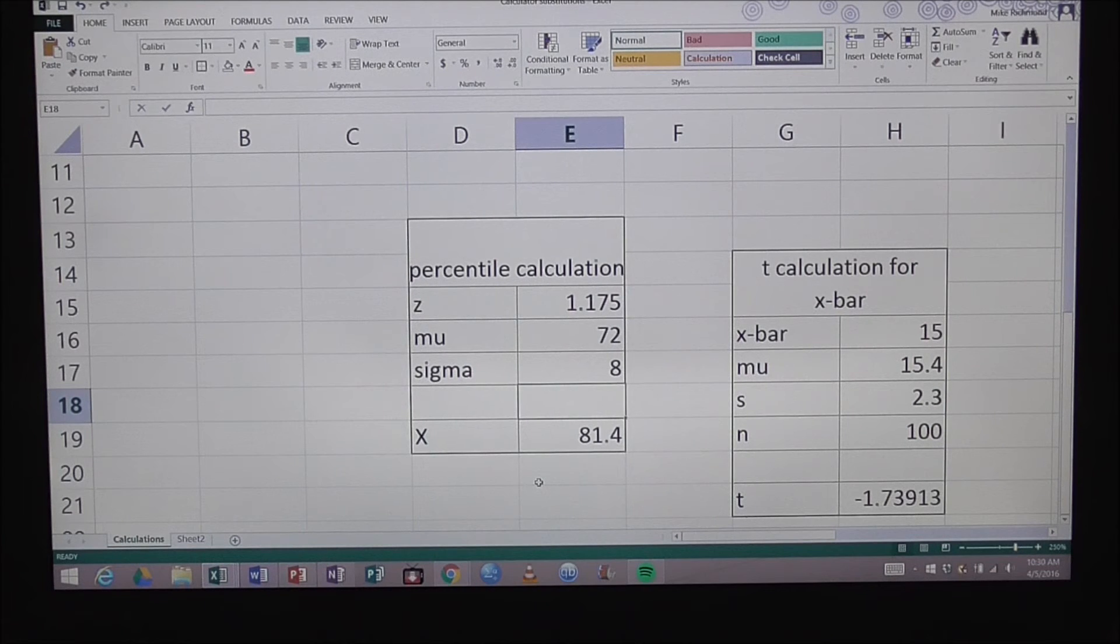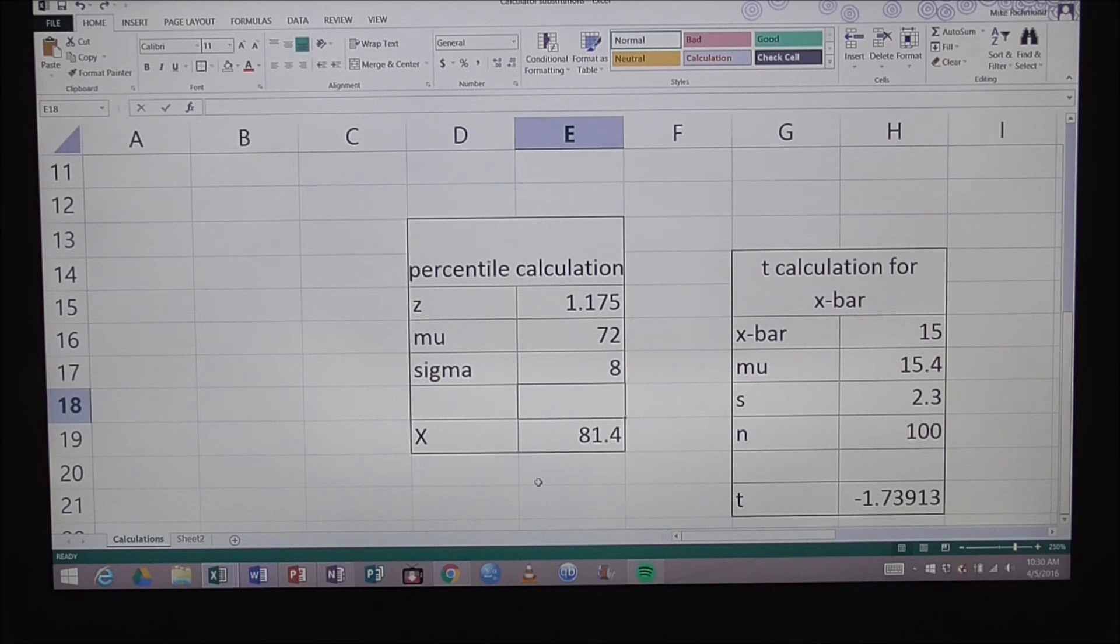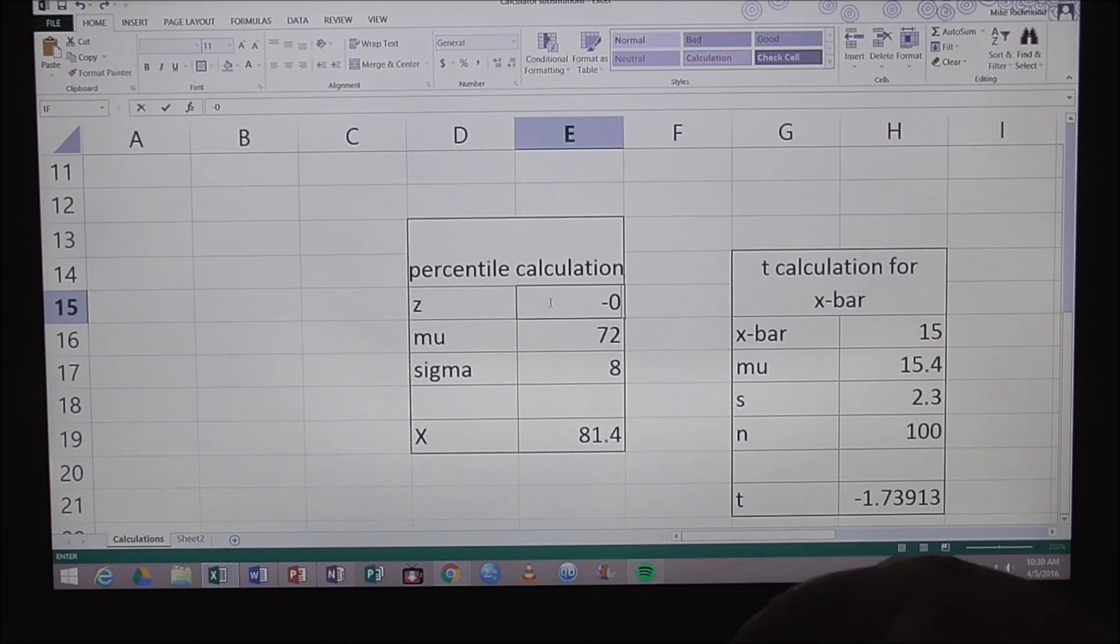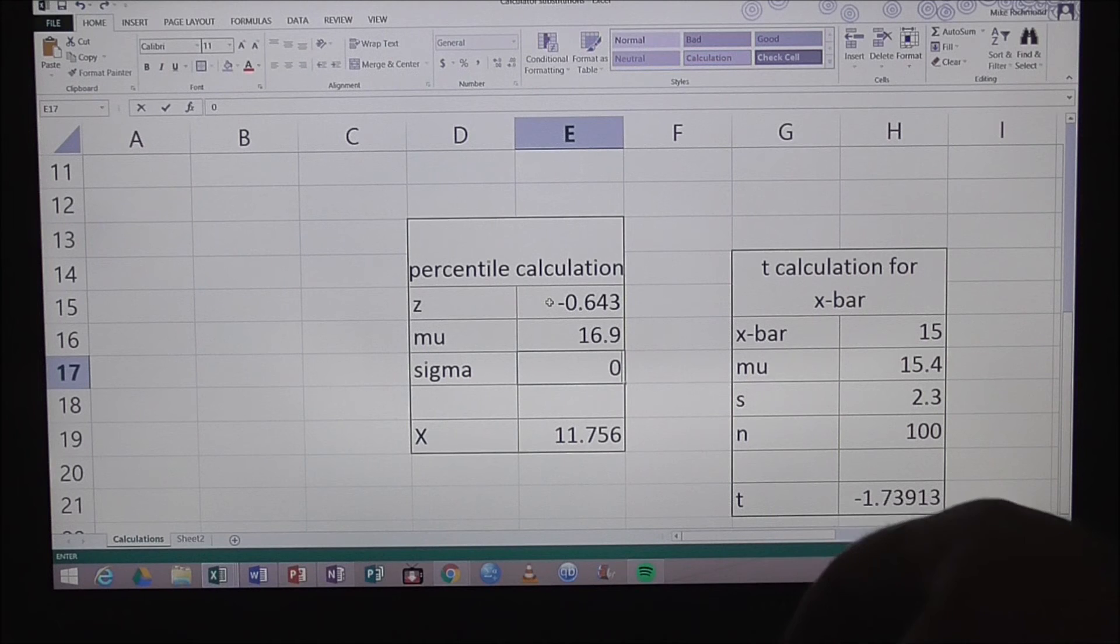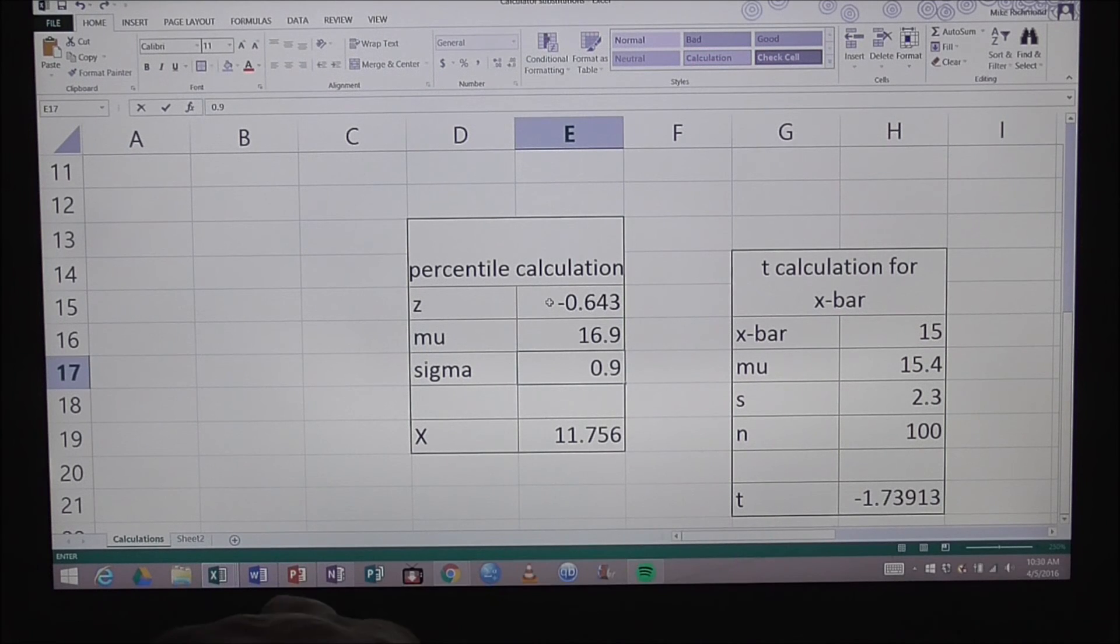Just as a reminder, I'm looking for the 26th percentile. The z-score that's associated with that is negative 0.643. My mu was 16.9 pounds, and my sigma is 0.92 pounds.